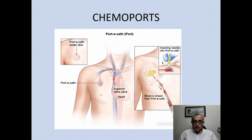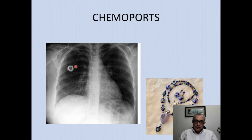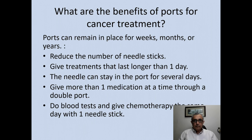Another option is chemo ports — pods placed under the skin in the chest. A tube runs into the superior vena cava lying just at the right atrium, and special needles access the port to allow blood to be drawn or chemotherapy to be infused. Here is an example of a patient with a port: the catheter goes through the SVC to lie in the right atrium.